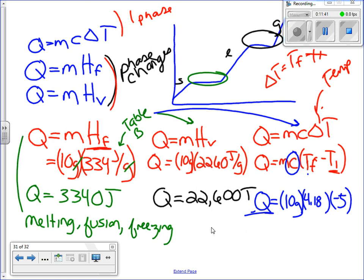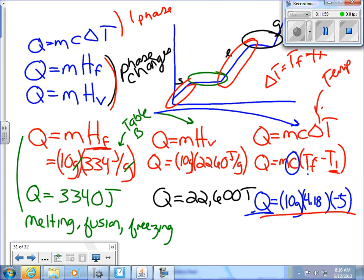So this Q equals mc delta T formula is going to be here. This one is here or here or here. Pick the right formula based on the understanding of what the question is asking you.